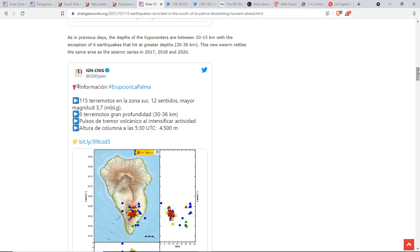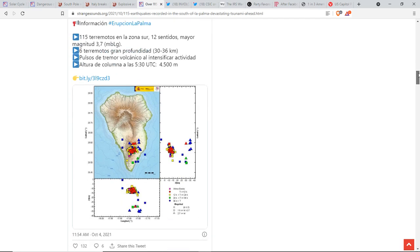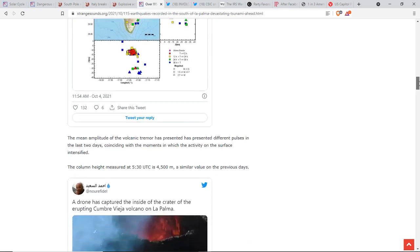So, as in previous days, the depths of the hypocenters are between 10 and 15 kilometers, with the exception of six quakes that hit at greater depths, 30 to 36 kilometers. This new swarm rattles the same area as seismic series in 2017, 18, and 2020. So, we have seen some there before.